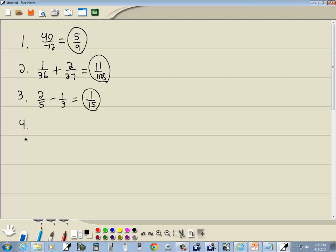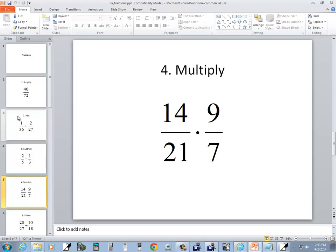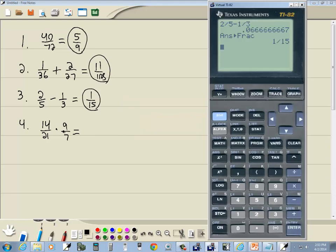For the most part, fractions, you just enter them as you see them. We're going to see the exceptions to that, though. Here, I've got 14 over 21 times 9 over 7. So we've got 14 divided by 21 times 9 divided by 7.